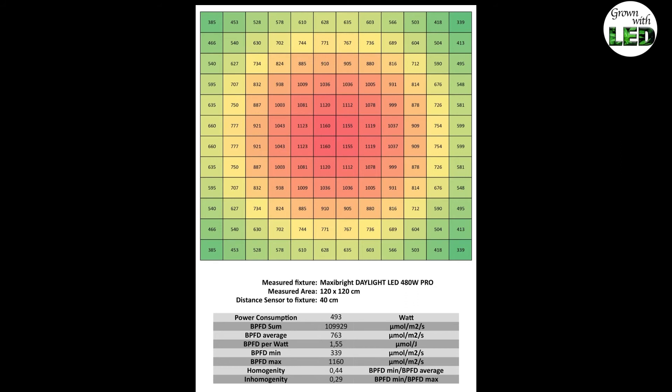The PPFD minimum value is 339 and is in the upper right corner of the plot. The PPFD maximum value is 1160 and is right in the center of the plot. The homogeneity calculates to 0.44 and the inhomogeneity calculates to 0.29.